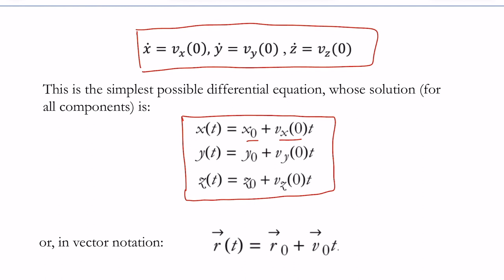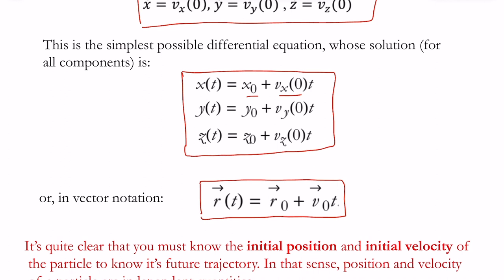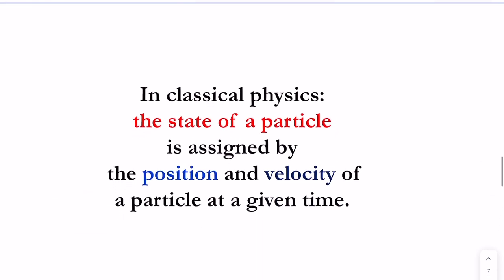If you know the initial position and the initial velocity of the particle, you can predict its future position at a later time. In short, this gives us the hint that if we know the initial position and initial momentum of a particle we can predict its future trajectory. This is how we define the state of a particle in classical physics: by assigning its position and velocity at a given time, which allows us to predict its position and momentum at any later time.